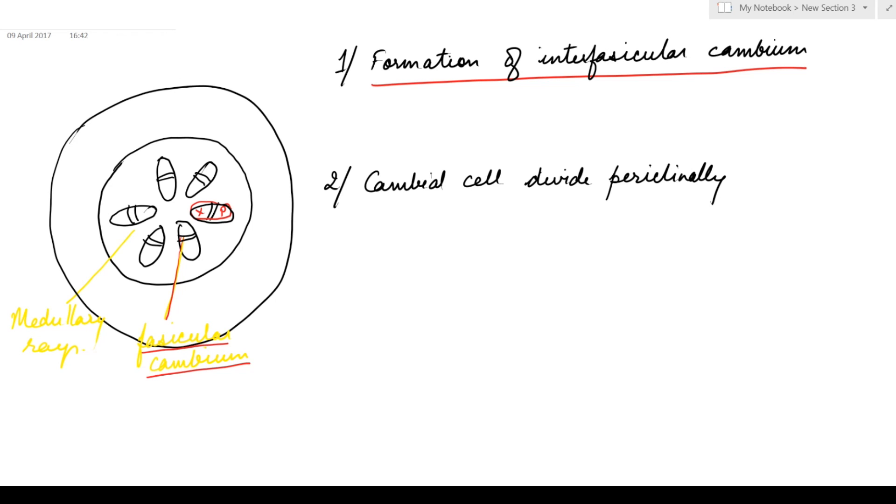And present between the vascular bundles are parenchyma cells that form the medullary rays. Cells of the medullary rays adjoining the fascicular cambium become meristematic, meaning they regain the ability to divide to form interfascicular cambium.